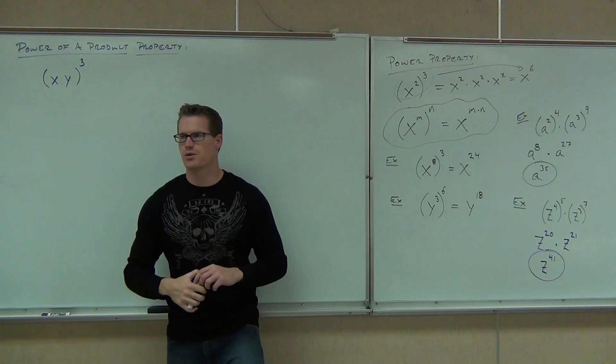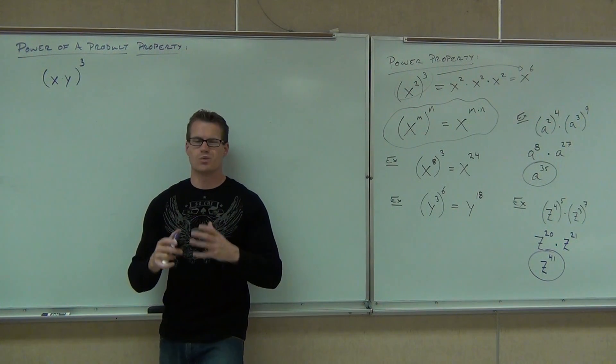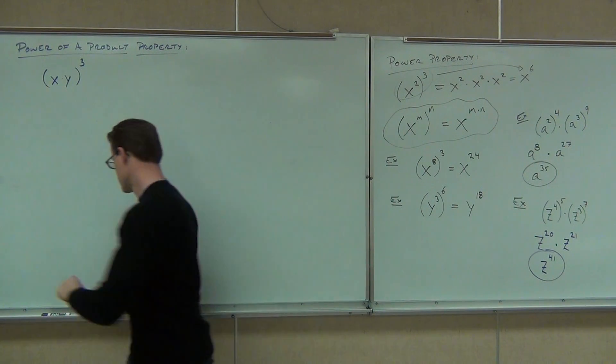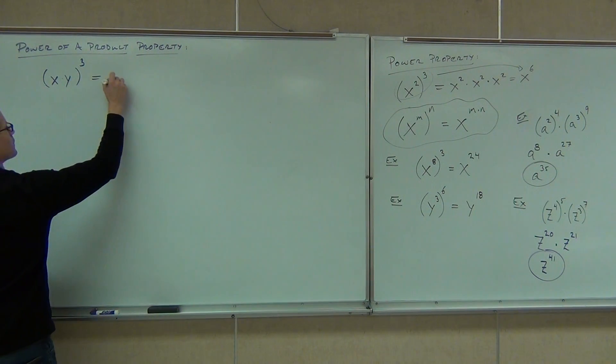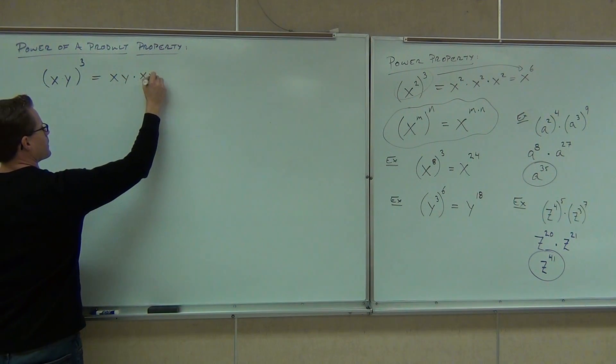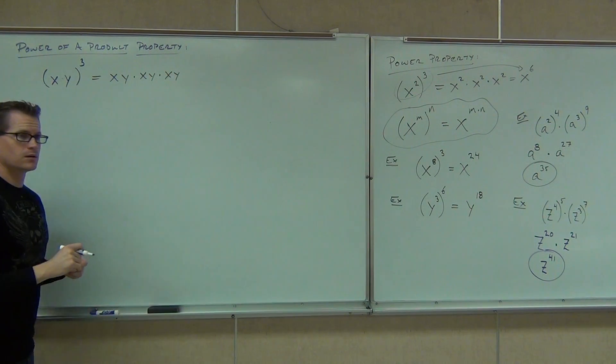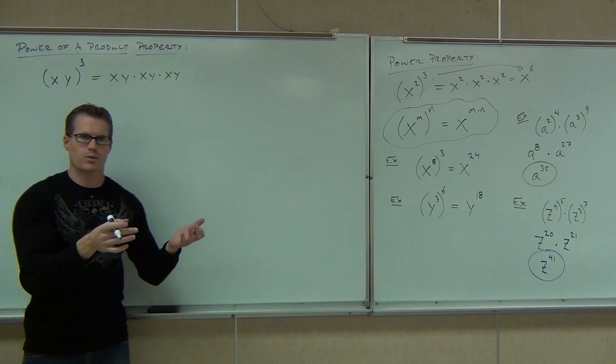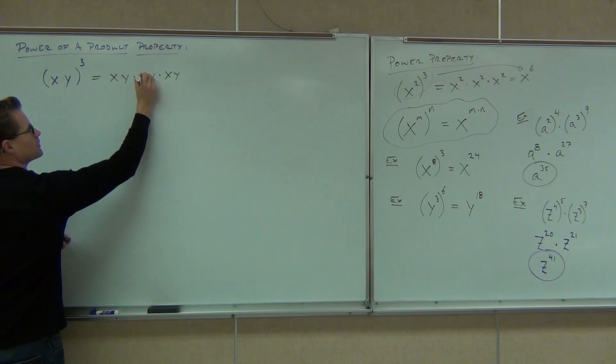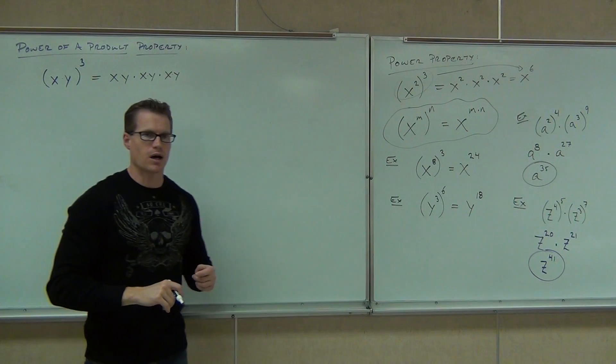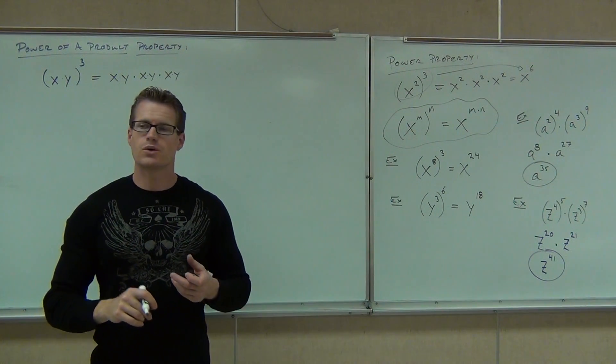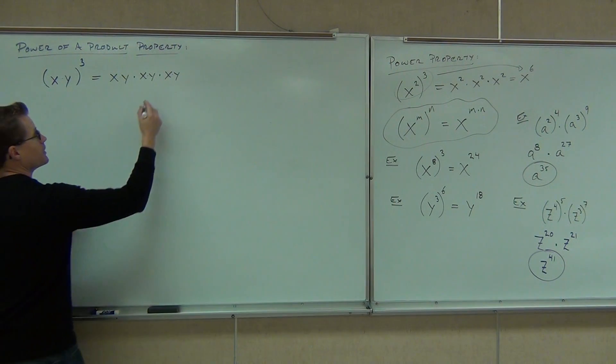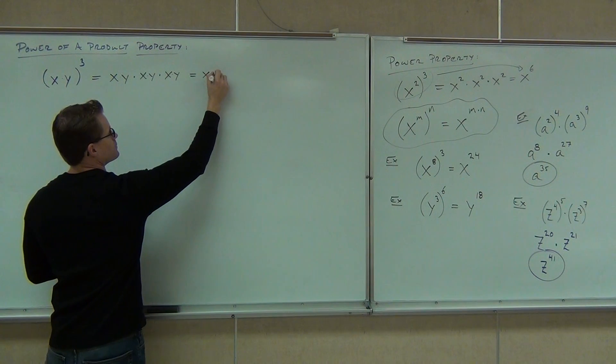Well let's think about what xy to the third means. xy to the third means three times, x times y, three times. That's to the third power, right? We just repeat that three times and we multiply. Well hey, you already told me that this really means times in there, right? xy means x times y. Also it's multiplication. I can reorganize anything I want to in multiplication. So I could write it as x times x times x times y times y times y.